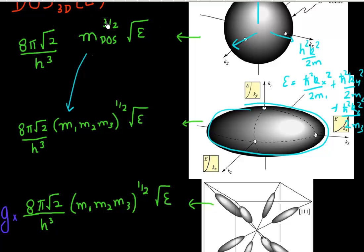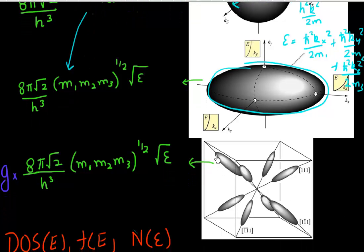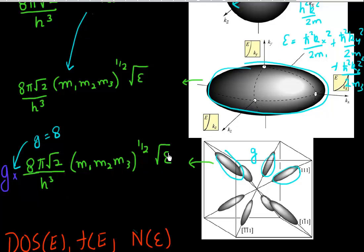Furthermore, instead of just one band, I could have degenerate bands. For example, for electrons in silicon there are eight equivalent bands in the [111] direction. The density of states is further multiplied by this degeneracy factor, which in this case equals eight, giving the equivalent density of states. Nonetheless, in terms of functional dependence, the density of states for a 3D semiconductor is proportional to the square root of energy.